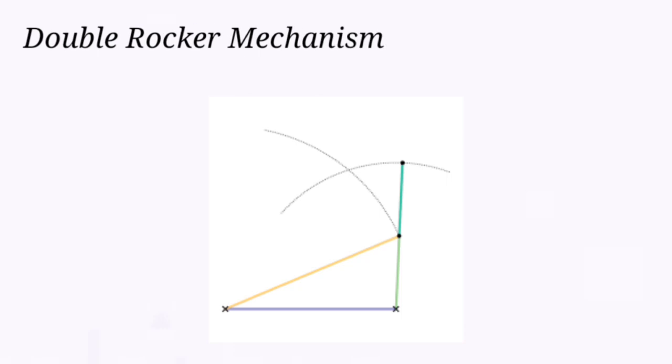What is double rocker mechanism? A mechanism in which both the input and output links are rockers is called double rocker mechanism.